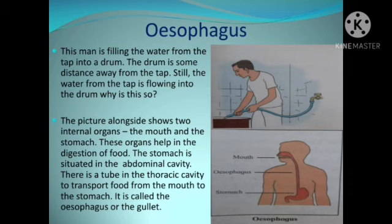These organs help in the digestion of food. The stomach is situated in the abdominal cavity. There is a tube in the thoracic cavity to transport food from the mouth to the stomach. It is called the esophagus, or the gullet.